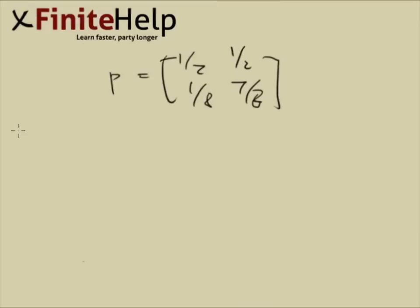Here we're trying to find w, w1, w2. And the idea of w is that when you are in the stable vector w, even if you go through p one more time, it's still w.